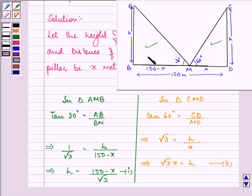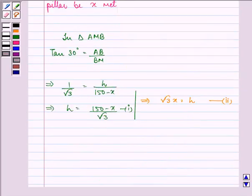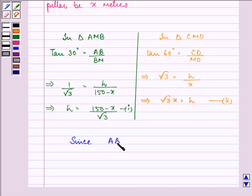Now, we know that AB is equal to CD. So, since AB is equal to CD is equal to H, therefore we have 150 minus X upon root 3 equal to root 3X.